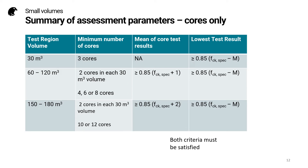This table summarizes how we have to do the assessment. If we have one test region volume of 30 cubic metres, we take three cores, and the criteria is based on the lowest test result with a safety factor. If we have higher volumes up to 180 cubic metres, we need to take two cores in each 30 cubic metre volume. We then have two criteria, both of which must be satisfied: the first is based on the mean of the core test results, and the second is based on the lowest test result.